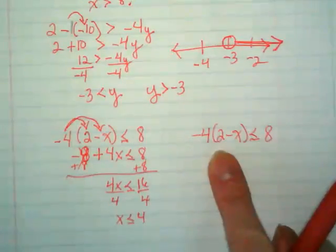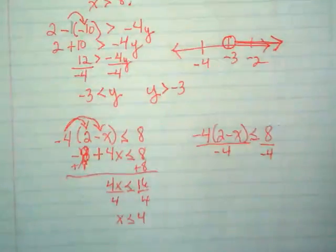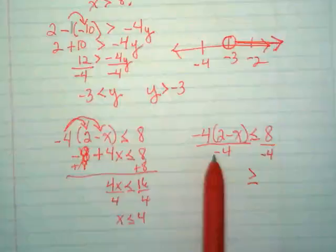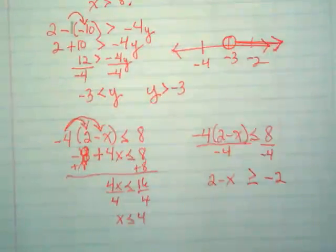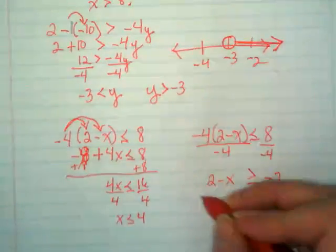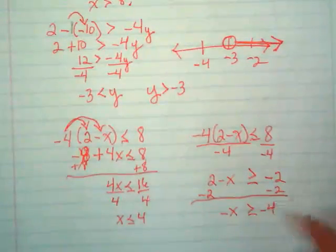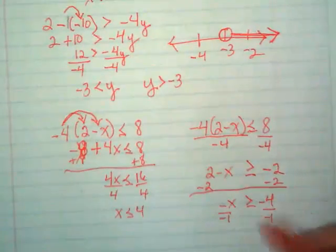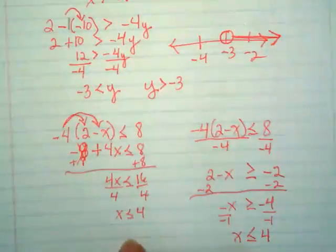What if I divided this by the negative 4 first? Then I wouldn't have to distribute it, and I'm not going to end up with that 4x. If I divide by negative 4, first of all, I'm dividing by a negative, so I'm going to have to flip my symbol. On the left side, I'm going to be left with 2 minus x. And on the right side, I'm going to be left with negative 2. I'm going to subtract 2 from both sides. Negative x is less than or equal to negative 4. We're not finished yet, though, are we? Divide by negative 1 means I have to flip that symbol again. Ended up with the same answer.